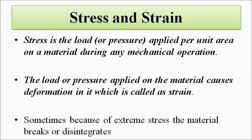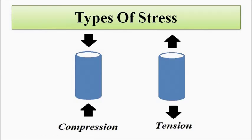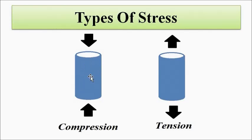This is the basic definition of stress and strain. Now, what are the different types of stress which a material can experience? Basically, there are five types of stress to which a material can be subjected in normal day-to-day applications. The first one is compressive stress, which tries to compress the material — because of this, there will be a reduction in length and an increase in cross-sectional area.